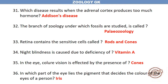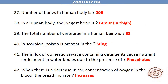In which part of the eye lies the pigment that decides the colour of the eyes of a person? Iris. The number of bones in the human body is 206. In a human body, the longest bone is the femur in the thigh. The total number of vertebrae in a human being is 33.